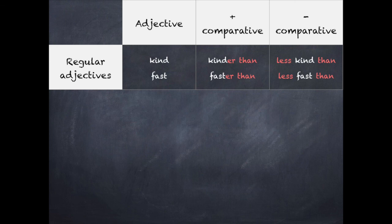The regular adjectives, short ones, we will use for example kind and fast. For the comparative it will be kinder than, faster than, and for the negative will be less kind than and less fast than.